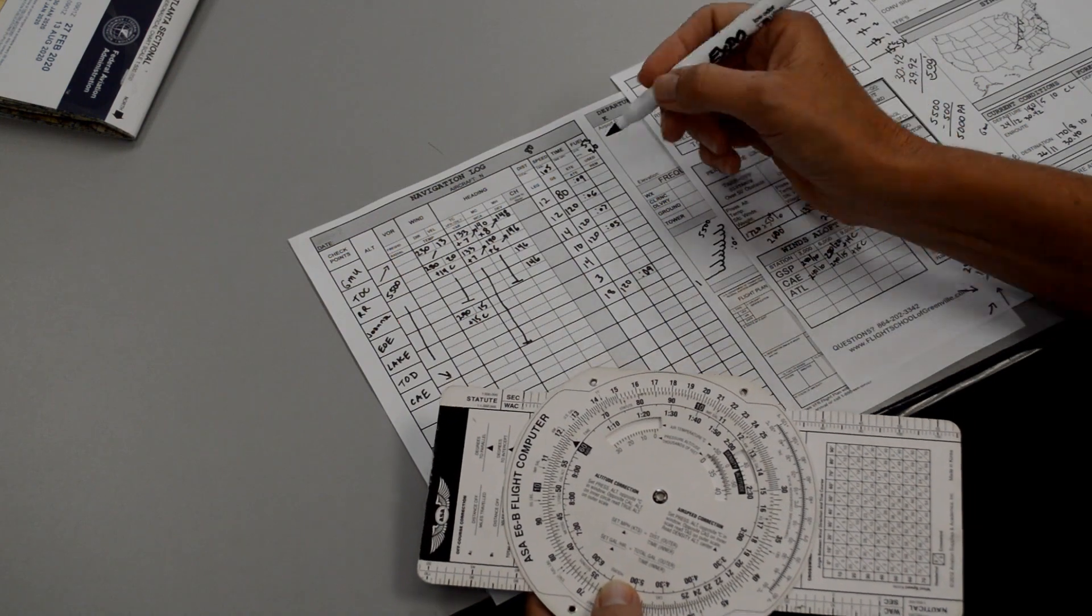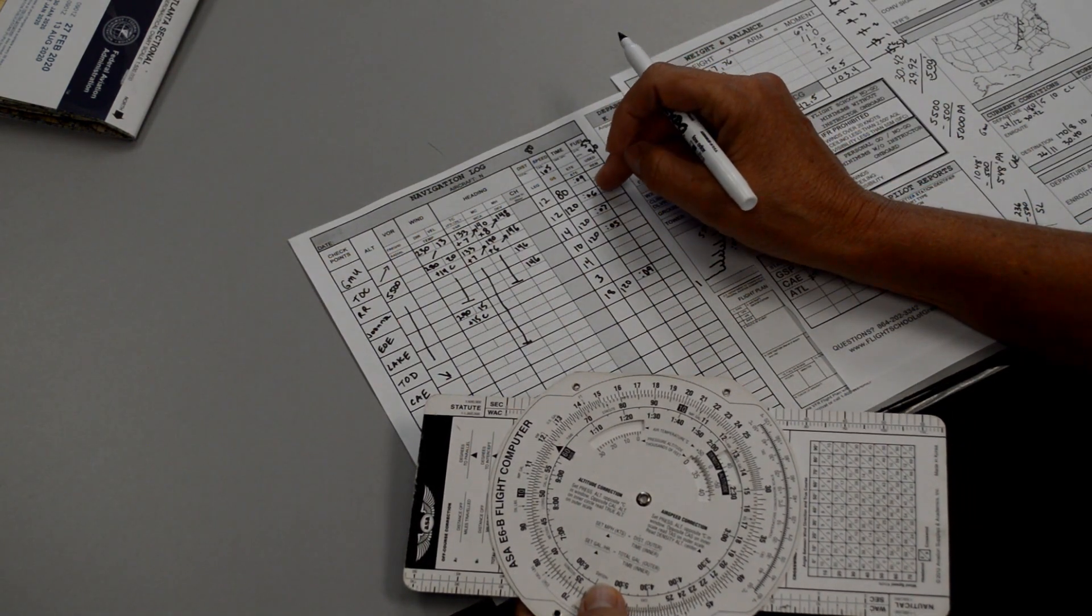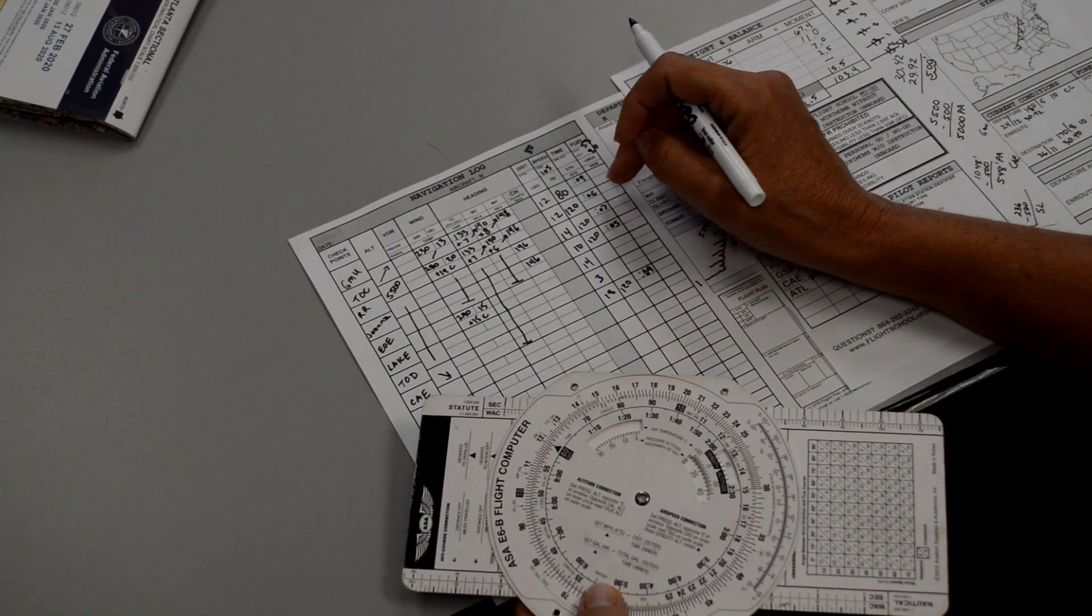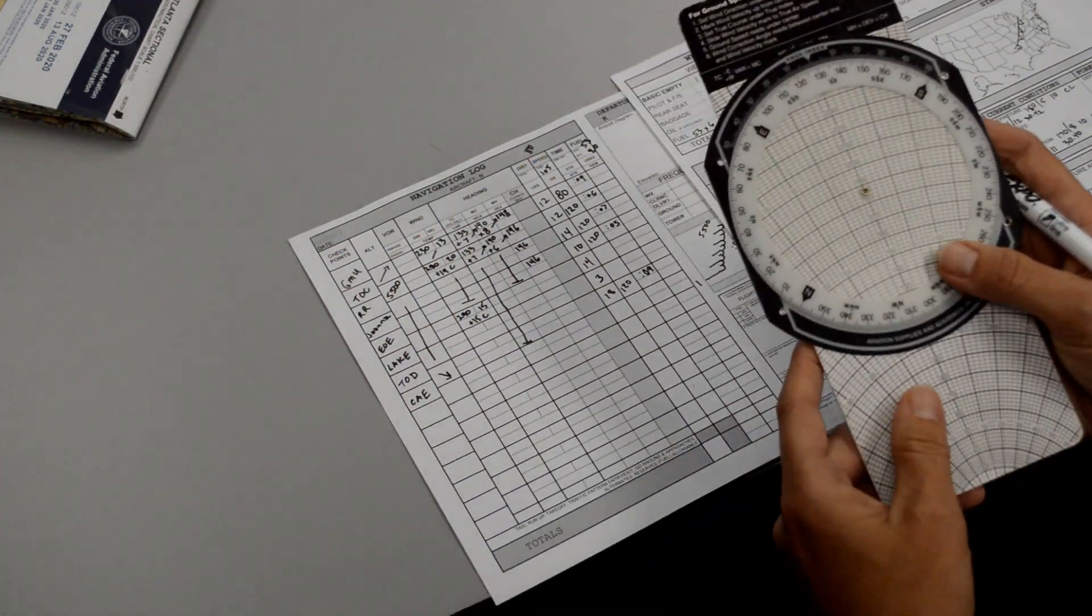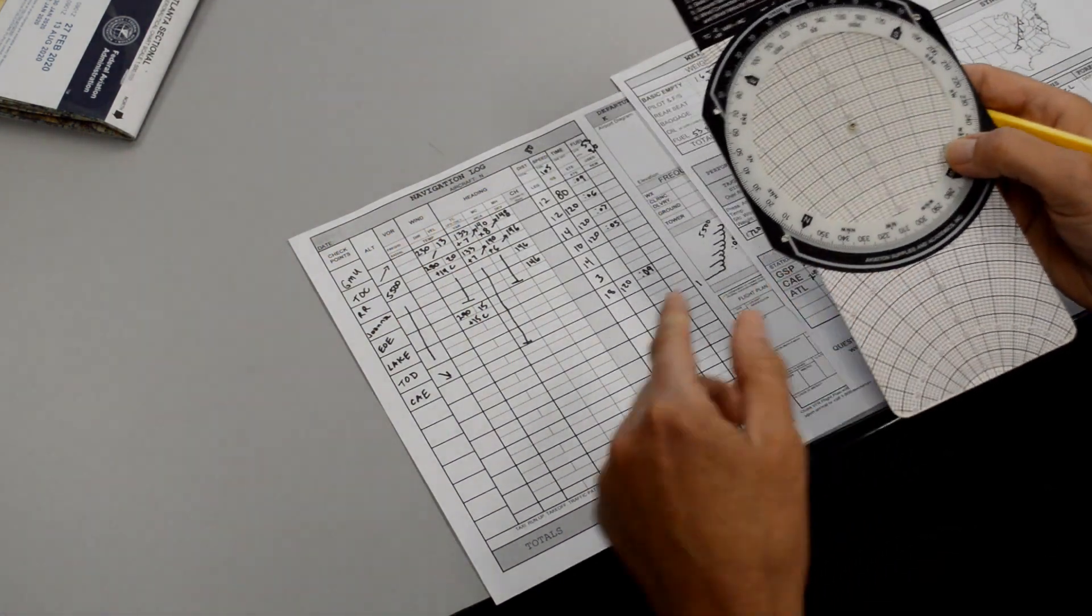So as I'm flying along, we reset the timer again and again to measure how long it's going to take us from checkpoint to checkpoint to be sure that we're burning the fuel that we estimated out in our flight plan. And we're going to have to recalculate out for the second half of our journey since the wind's changed a little bit.